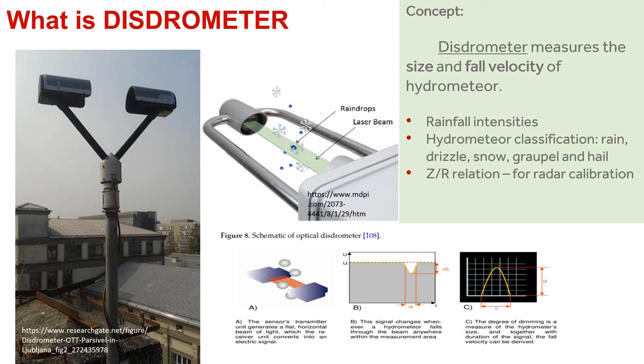In addition, distrometers can also measure rainfall intensity. They can classify hydrometeors, and more importantly, they can be used for radar calibration for the derivation of the ZR relation.